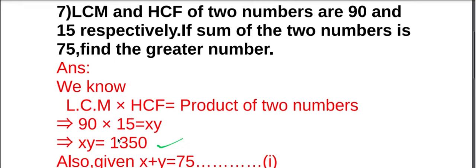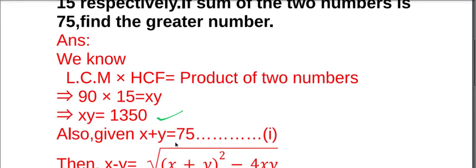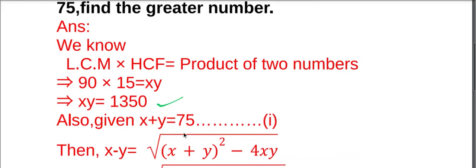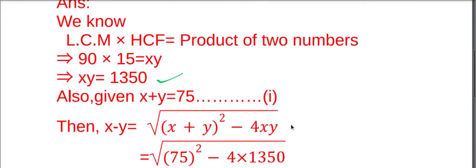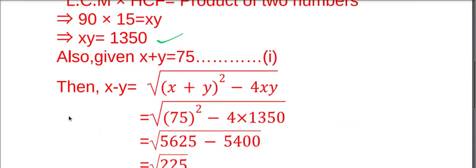Also given, sum of the two numbers is 75, so X plus Y equals 75. This is equation number one. And we also use the formula X minus Y equals square root of X plus Y whole square minus 4XY.